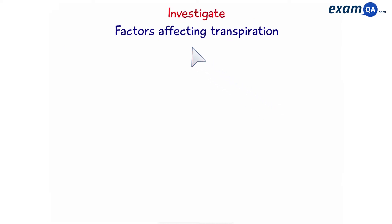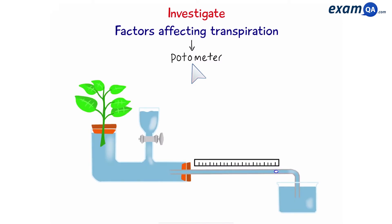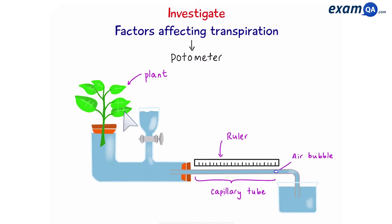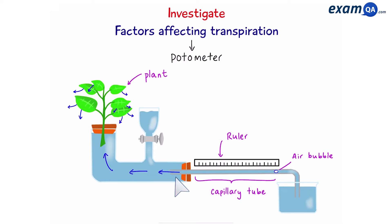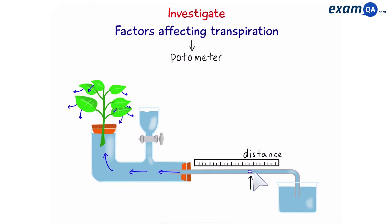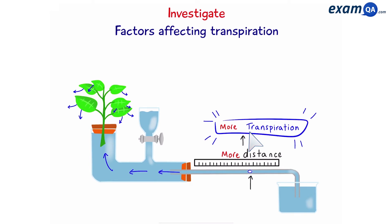Now let's talk about how we can investigate different factors that affect transpiration. To do this, we're going to use a potometer. We have a plant, which is the main subject of the experiment, a capillary tube, and an air bubble. As the plant transpires, it loses water, and to replace it, it takes up water from the apparatus. This means there's a continuous stream of water moving into the plant, and as a result, the air bubble will also move. We can measure the distance the air bubble has moved using the ruler — the more distance it has moved, the more transpiration has occurred. This gives us the perfect setup to investigate the four factors affecting transpiration.